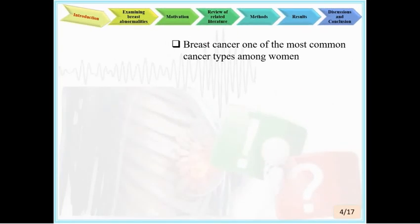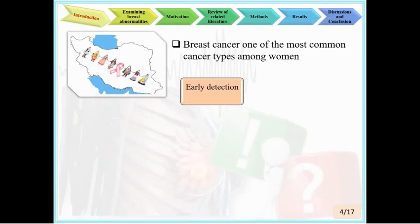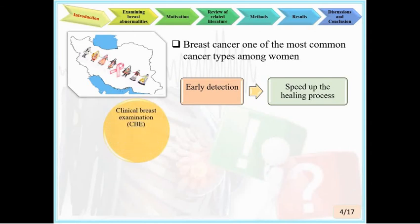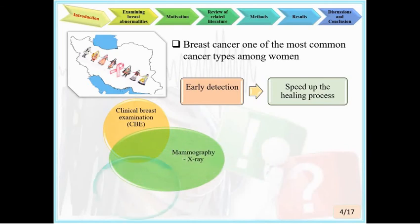Breast cancer is one of the most common cancer types among women, including in Iran. Early awareness can speed up the healing process, so early detection plays a vital role in treatment. Methods used for breast examination include clinical breast examination (CBE) used in earlier stages, mammography based on X-ray, ultrasound, RF time signal analysis, and elastography.